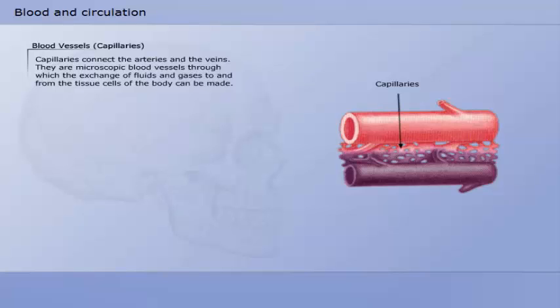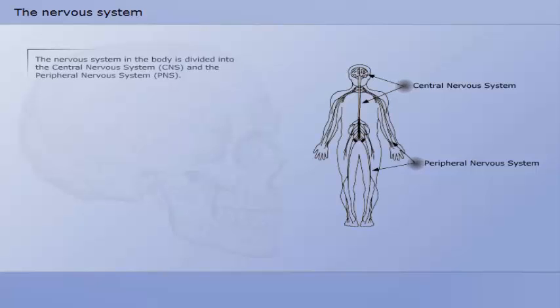Capillaries connect the arteries and the veins. They are microscopic blood vessels through which the exchange of fluids and gases to and from the tissue cells of the body can be made.